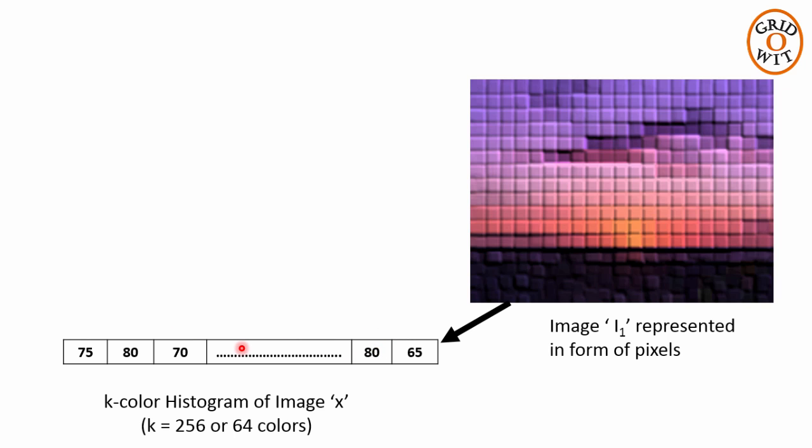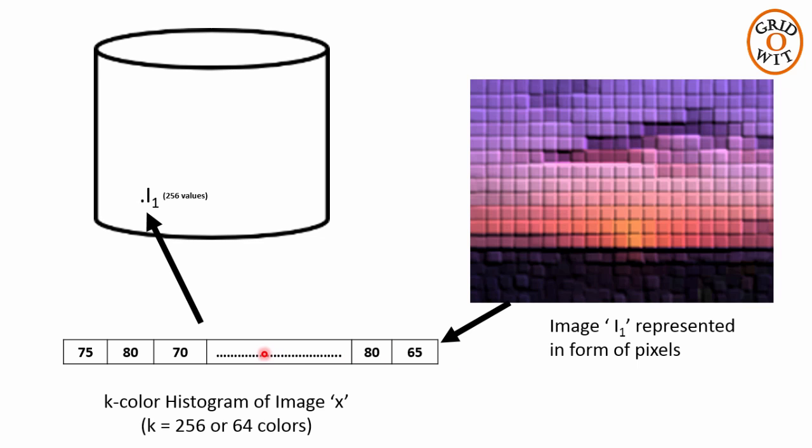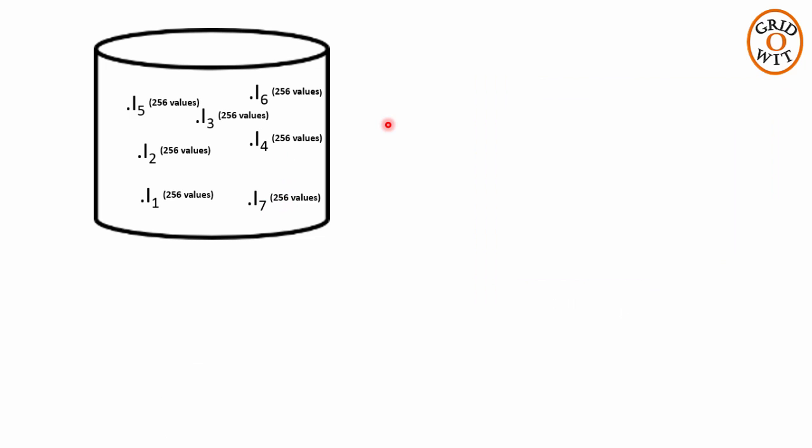Now instead of storing this image we will store these 256 values in the database. And we will repeat this process for all the images we are having. So now we have a database of images and each image is nothing but a vector of 256 values.